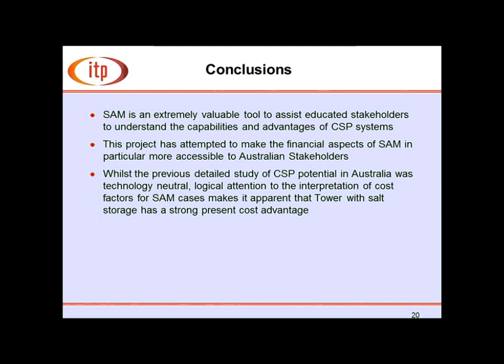I think I've pretty much used up all the time, which brings us to the conclusion. SAM is an extremely valuable tool to assist educated stakeholders to understand the capabilities and advantages of CSP systems. This project has attempted to make the financial aspects of SAM in particular more accessible to Australian stakeholders. And whilst the previous study of CSP potential in Australia was technology neutral, what we find in this project is that logical attention to the interpretation of cost factors makes it apparent that tower with molten salt has a very strong present cost advantage — and I'd make the point that is only so long as the tower solution has the cheapest storage. When other technologies can bring their storage costs down, they're certainly very much in the race as well. So thank you very much everybody for your attention.